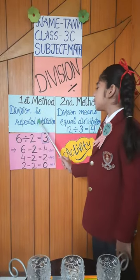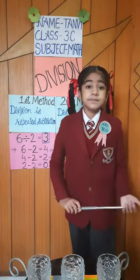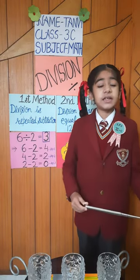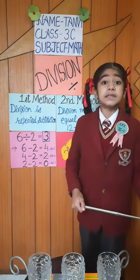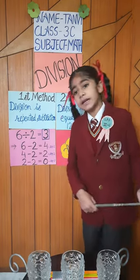First method: division is repeated subtraction. For example, 6 divided by 2 means subtract 2 from 6 repeatedly.